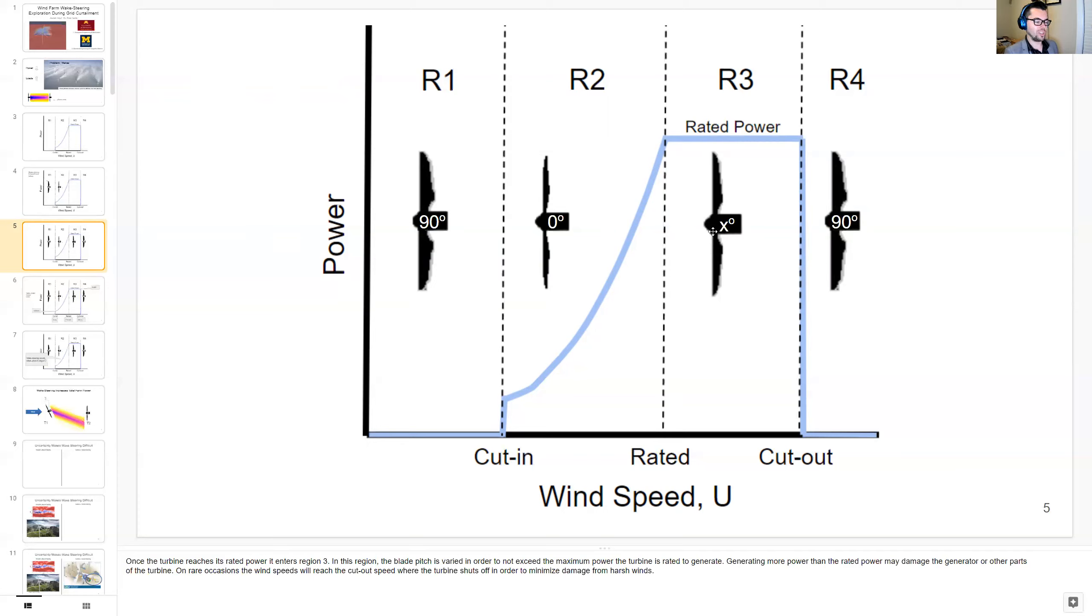On rare occasions, the wind speeds will reach the cut-out wind speed and the turbine shuts off in order to minimize damage from harsh winds.